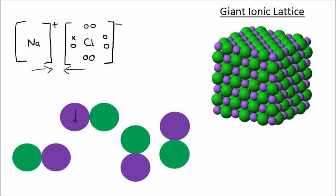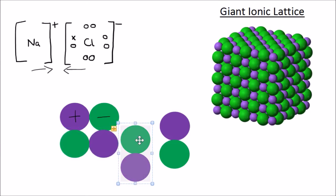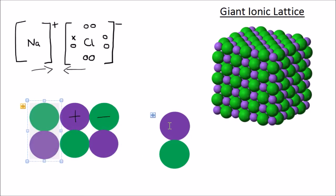If we take this purple circle to be our positive sodium ion and this green circle to be our negative chloride ion, other sodium chloride molecules will be attracted to them like so because they will also feel that electrostatic attraction.